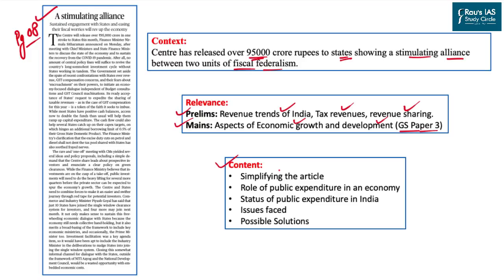For today's discussion, content includes a detailed analysis of the article, the role of public expenditure in a developing economy like India, the status of public expenditure in India with major datasets from the Economic Survey and budget, issues faced by the government at centre and state levels while going for public expenditure, negative impacts of high public expenditure, and lastly, possible solutions to bring back public expenditure without negatively impacting the economy.